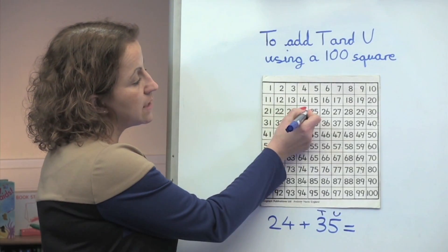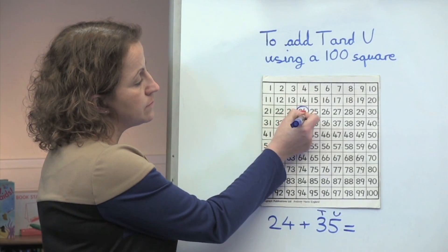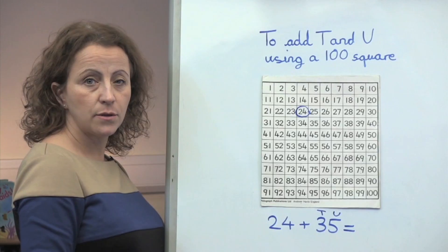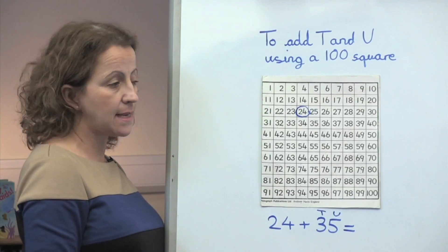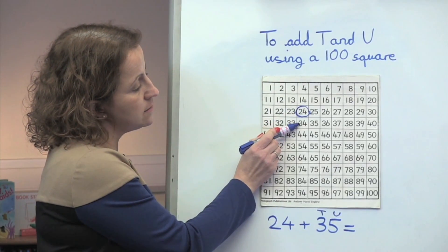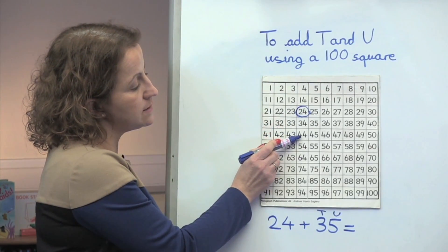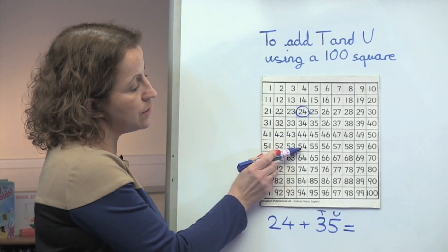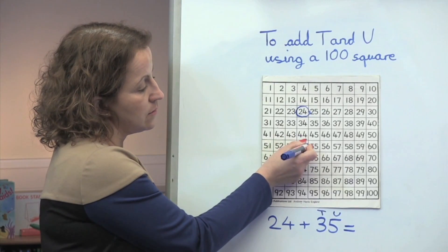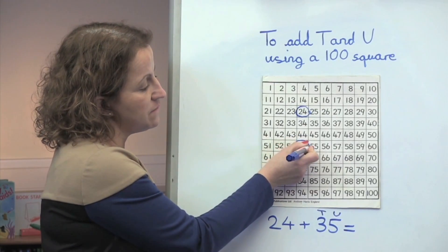24 is here. Let's add 3 tens. 10, 20, 30 — 54.